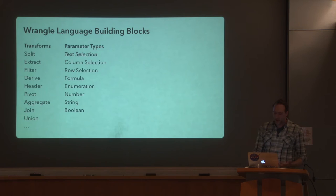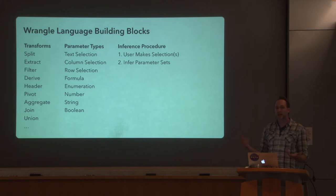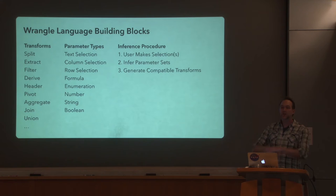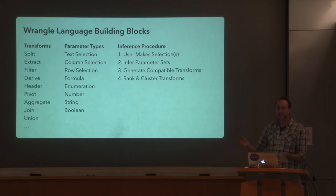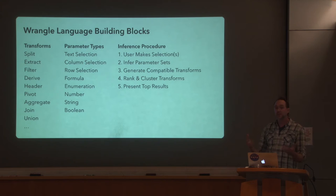The overall Wrangler inference process is: when the user makes a selection in a data table, we generate a set of parameters — text selections using the procedure I just described; column and row selections, which are simpler but can also be generalized (for example, looking at rows that are empty). Then we take those parameters that match the user input and see what transforms accept parameters of that type. We generate a whole space of transforms, then rank and cluster them based on what they do to the data and some measures of quality. We bootstrap this with hand-coded heuristics, but each aspect can also be tuned through usage — learning which transforms are more likely given previous actions, fine-tuning weights over different ranking functions. Results are presented through visualized previews as well as snippets of the actual transforms.